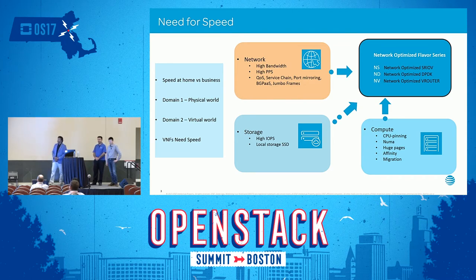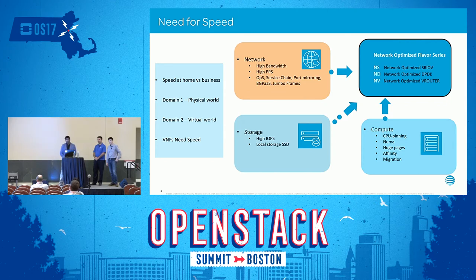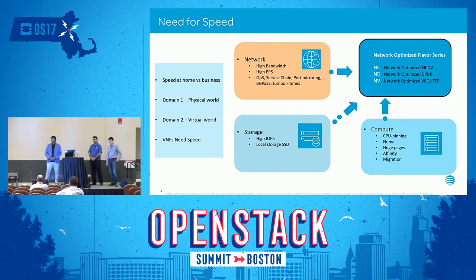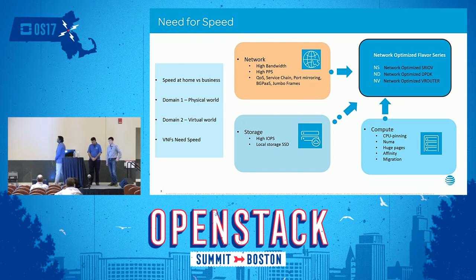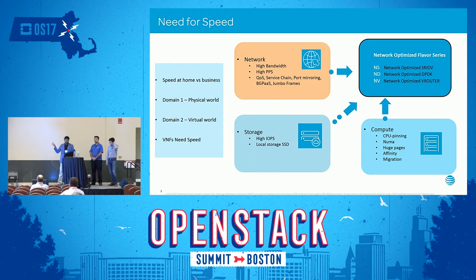We identified three network-optimized flavor series. NS is network-optimized SRIOV — anyone needing SRIOV creates from this series. The second is network-optimized DPDK. The third is regular plain kernel V-Router or OVS. These three types cover the network configurations a VNF would typically need.